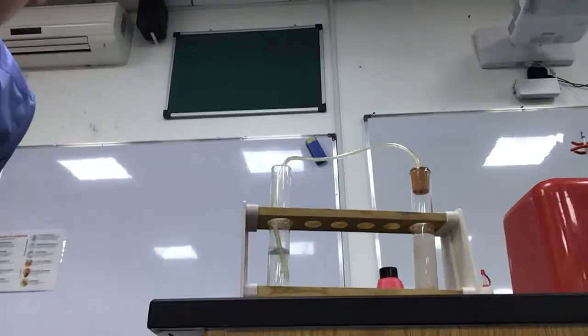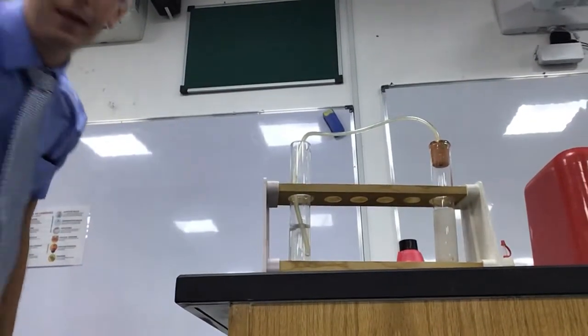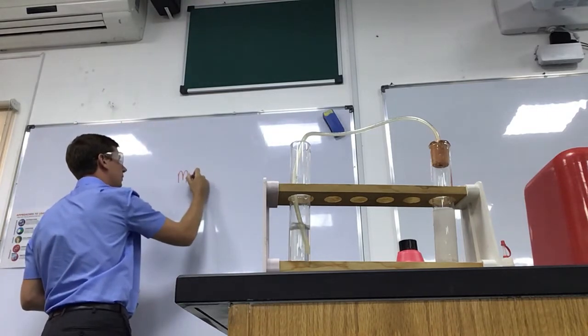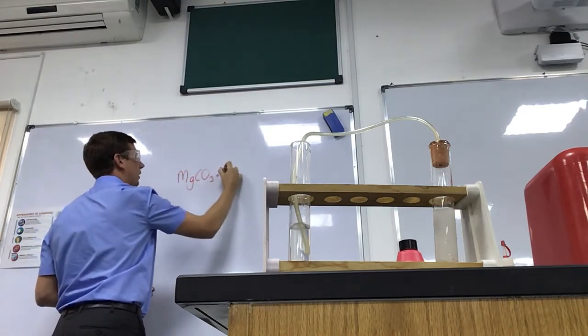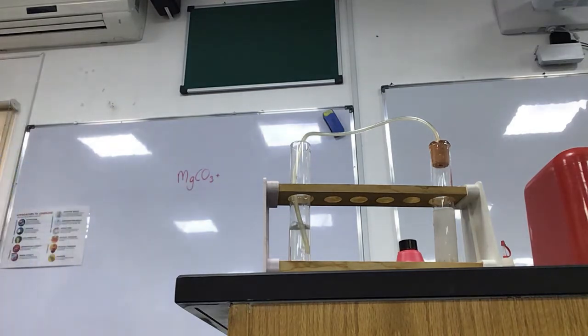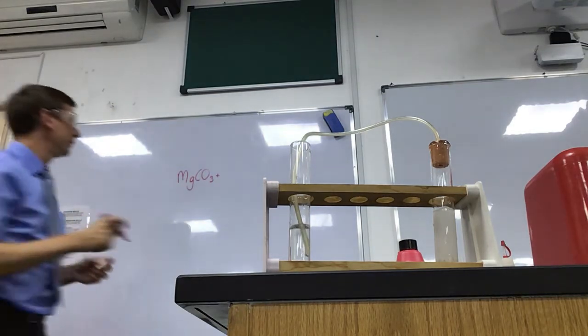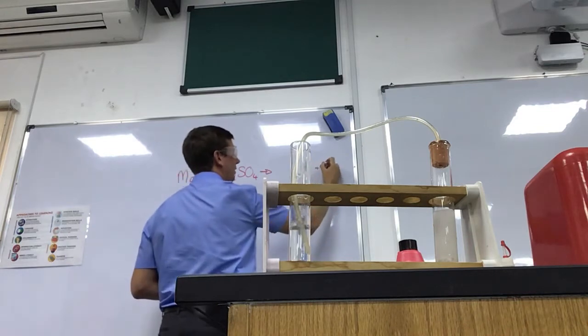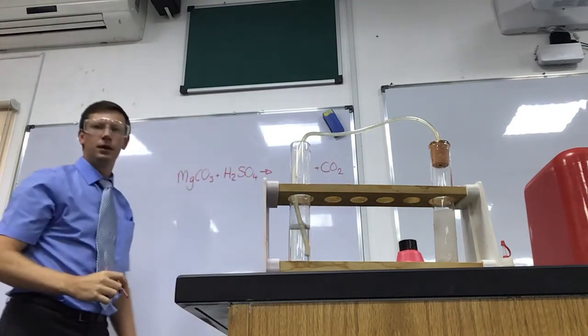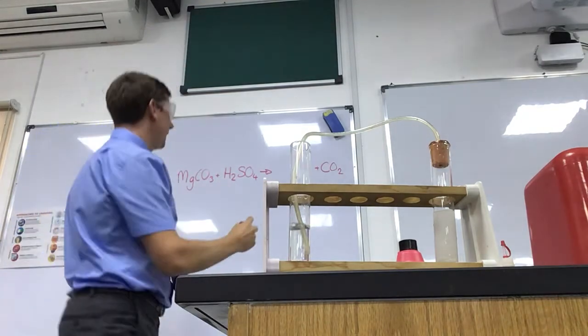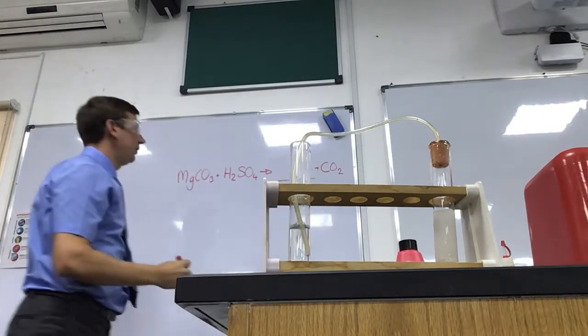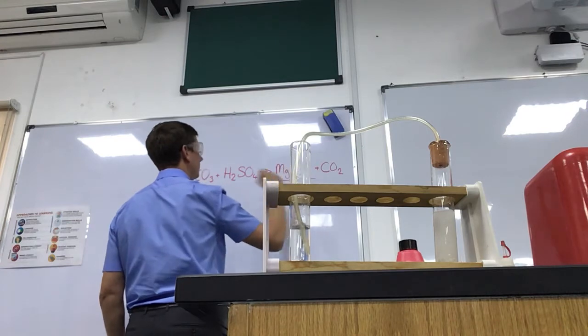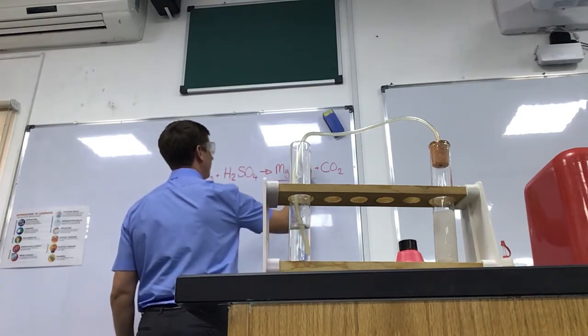So we'll have a look on this board. So we've had magnesium carbonate with, what did we react it with? Sulfuric acid, H2SO4. And so we know that we've got carbon dioxide released. What we don't know is a bit hidden by the test tube in the video. It's all the other stuff. Magnesium sulfate, probably.